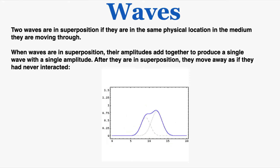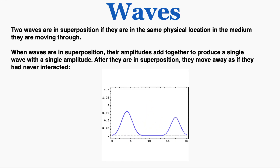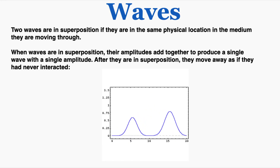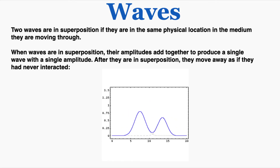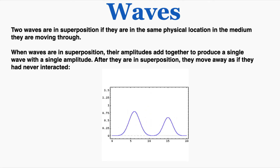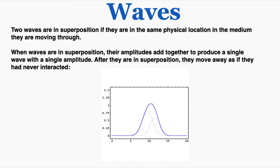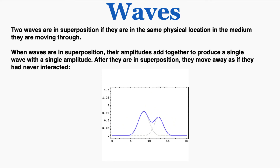This lecture is about the superposition of waves. Two waves are in superposition if they are in the same physical location in the medium they are moving through. When waves are in superposition, their amplitudes add together to produce a single wave with a single amplitude, and after they're in superposition, they move away as if they had never interacted in the first place.